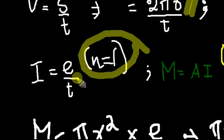So you know that q is equal to ne. And substituting the value of n equal to 1 right here, we can write i is equal to e by t. Next, you have to also remember this equation.